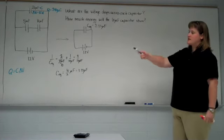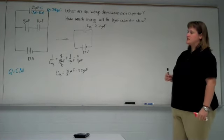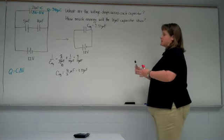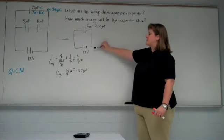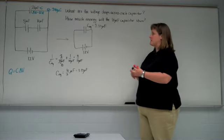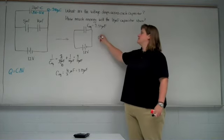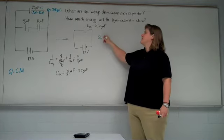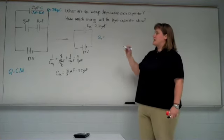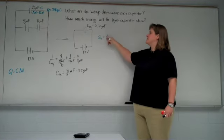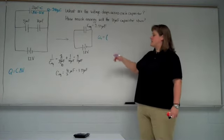Remember that that equation, the Q is equal to C delta V works for any individual capacitor, but it works for the circuit as a whole as well. So by knowing the equivalent capacitance and the total voltage, we can find the total charge. The total charge that accumulates on that capacitor.